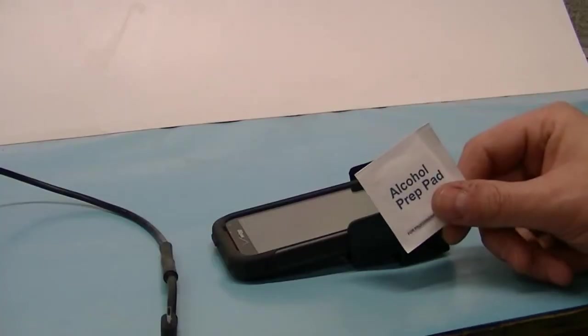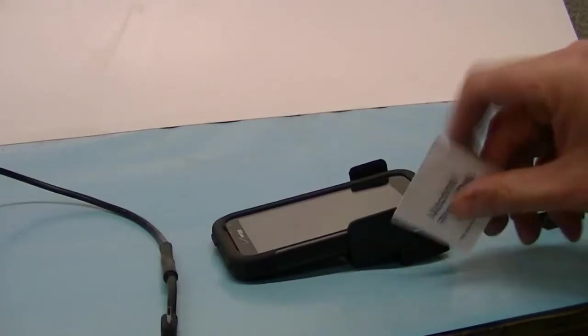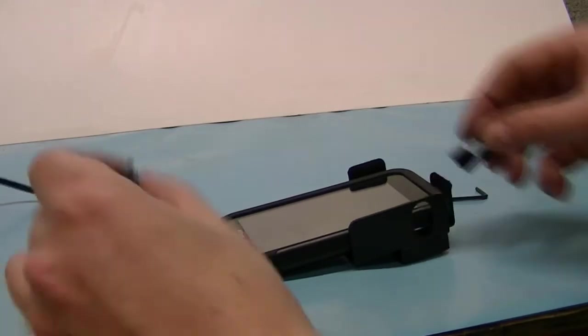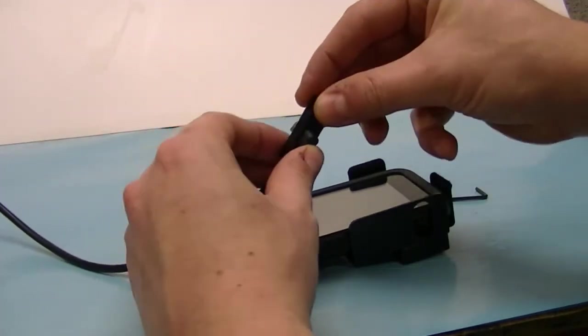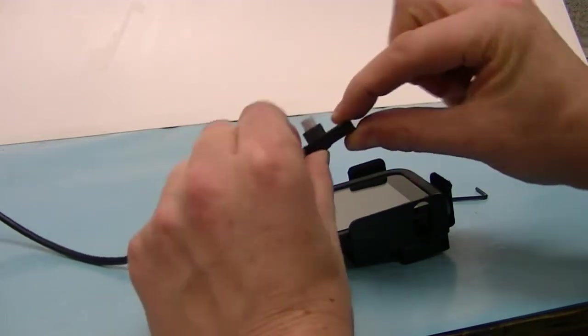Now go ahead and take one of your alcohol pads, wipe down the bottom of your dock. Now slide your cord into this block. Push it all the way through as far as it will go.